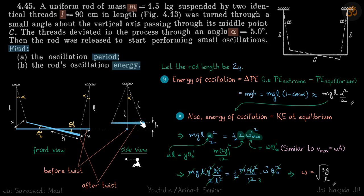These two are the positions of the rod after the twist. Now let's write energy of oscillation which is change in potential energy. If we take this as zero, the potential energy at extreme is mgh.